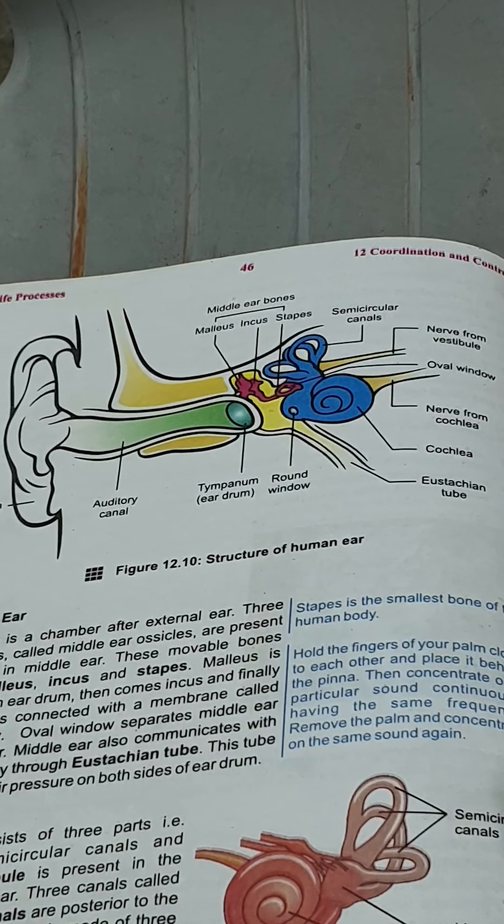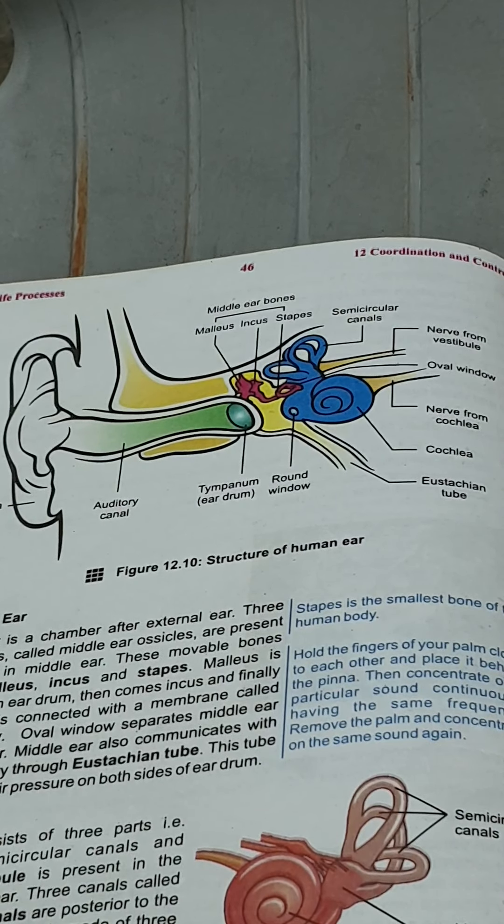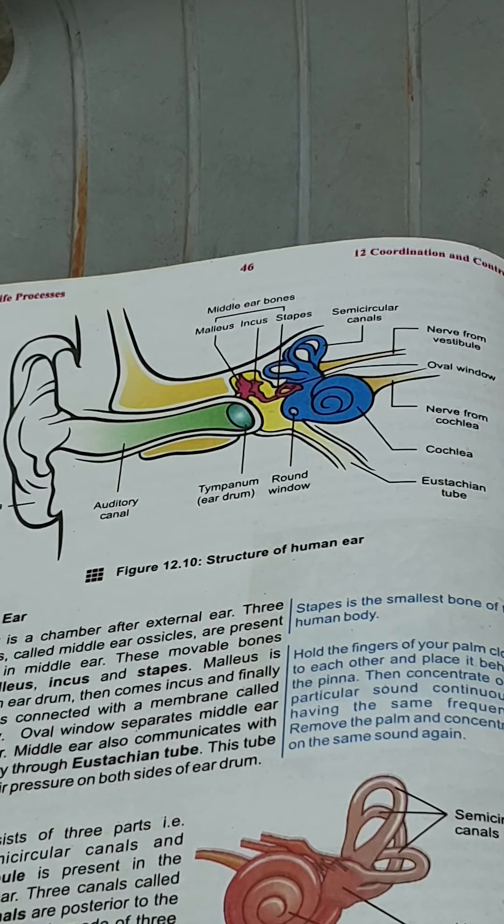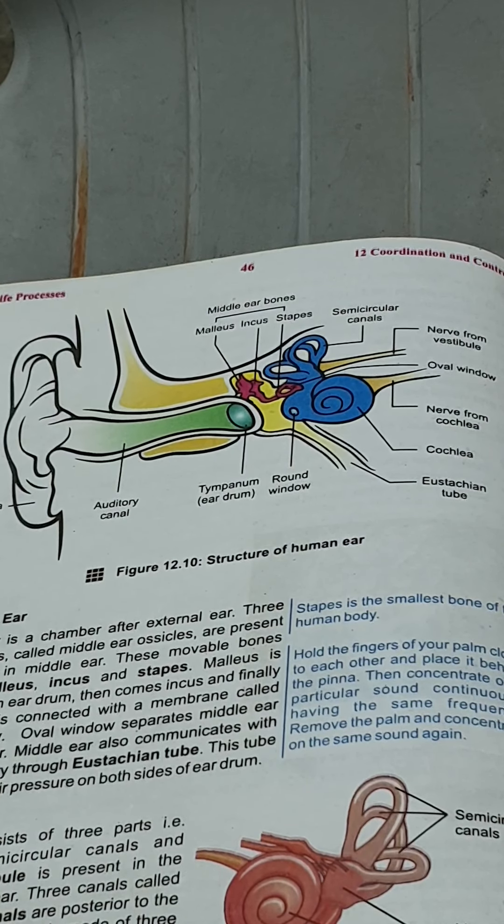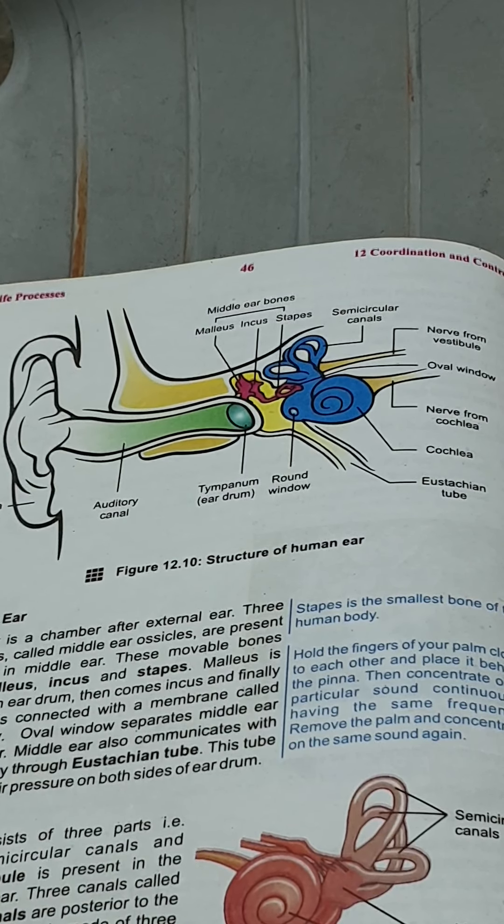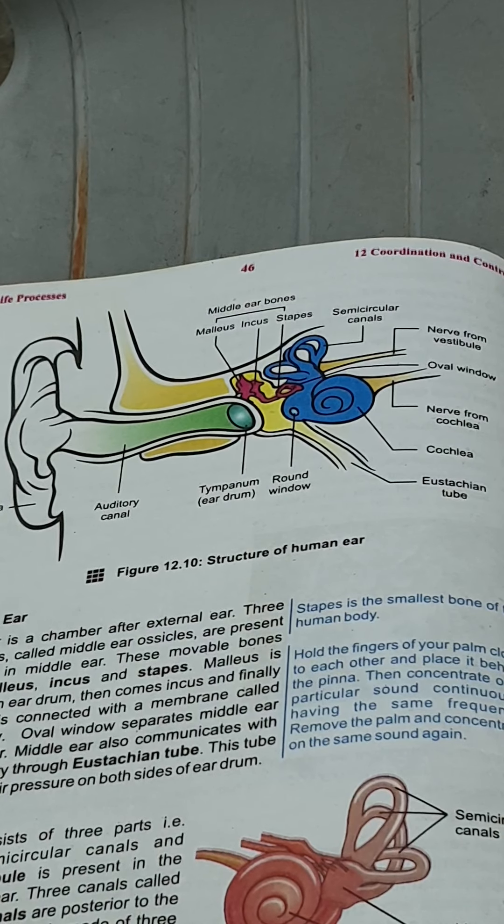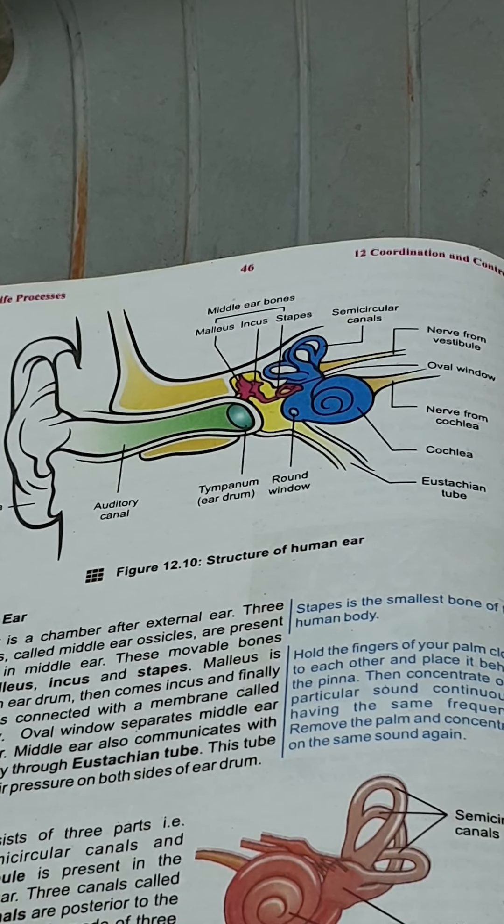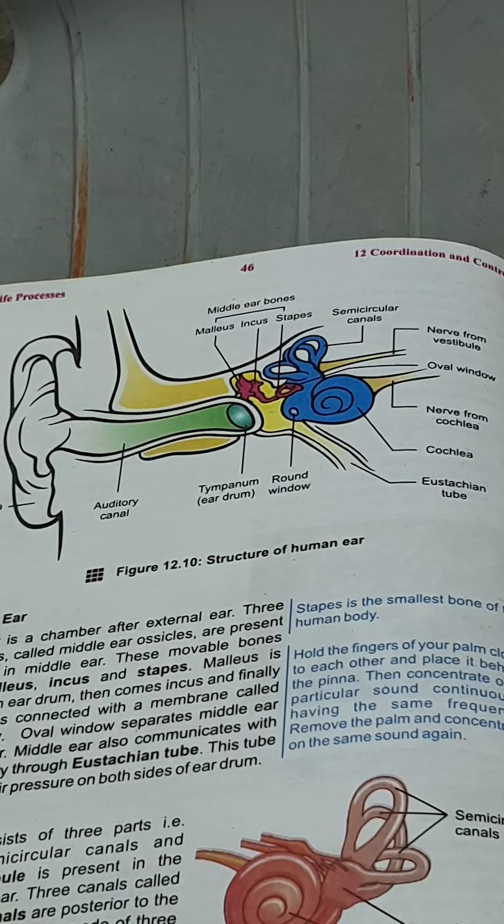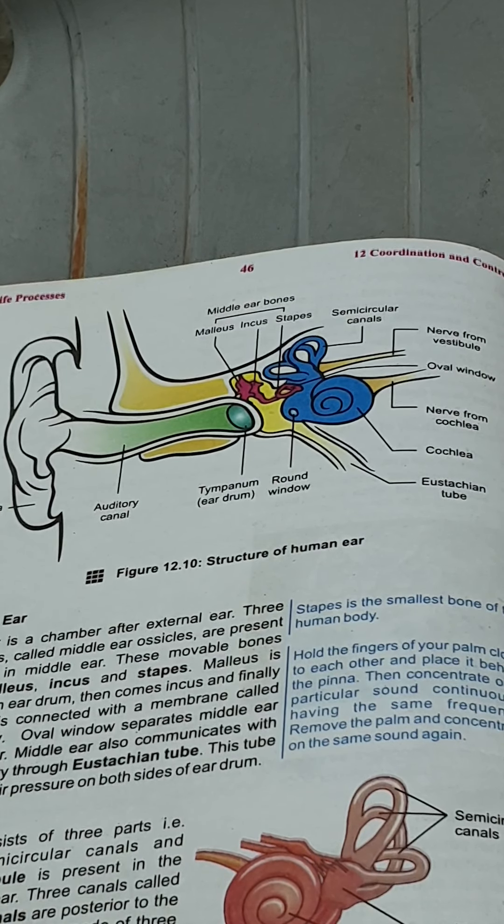When there are changes in our environment producing any sound, we can detect which sound and which type of sound is produced in our environment. So it tells us about the different sounds that are created in the external environment.